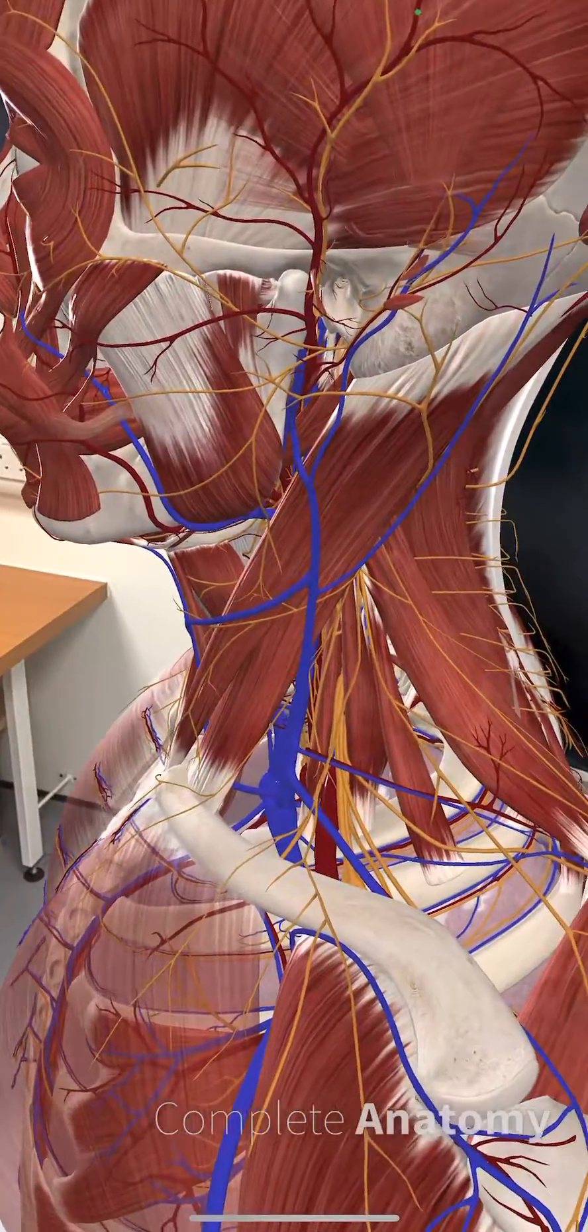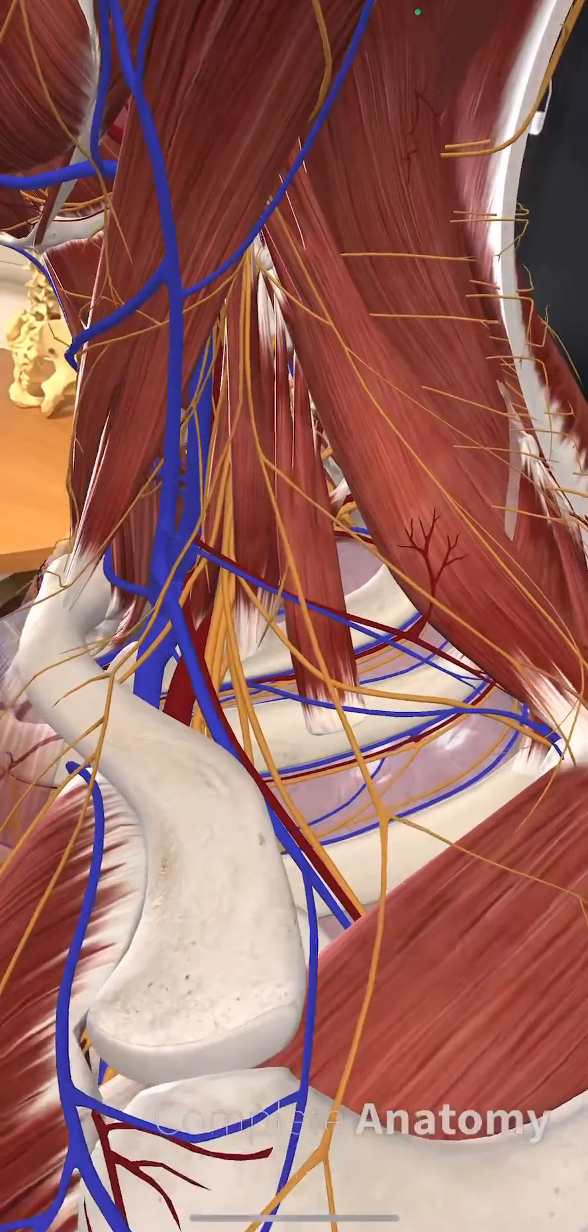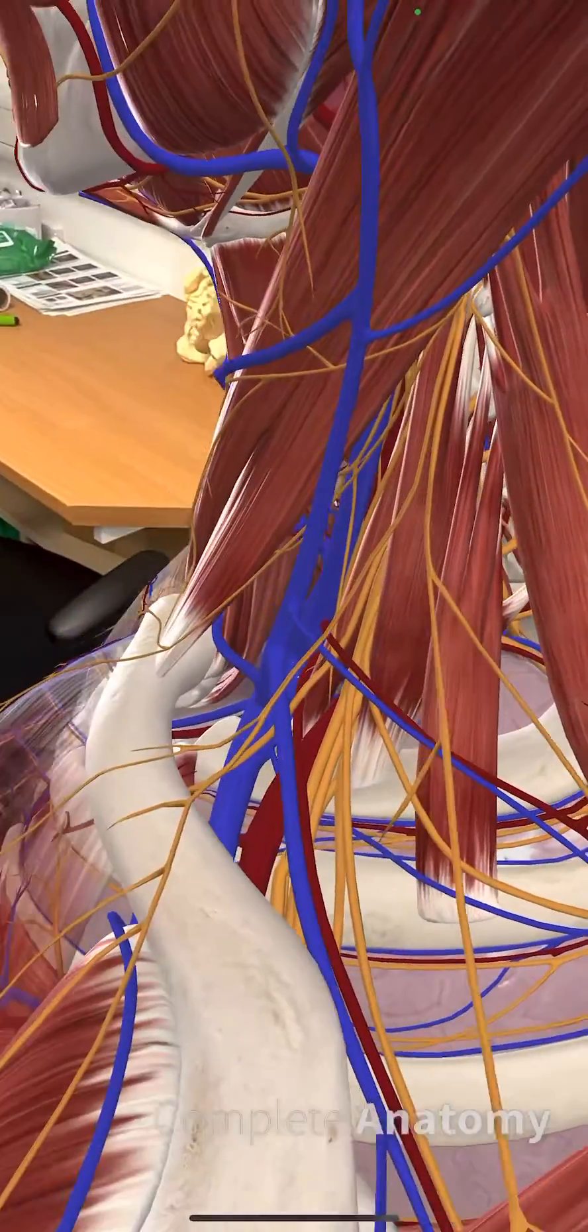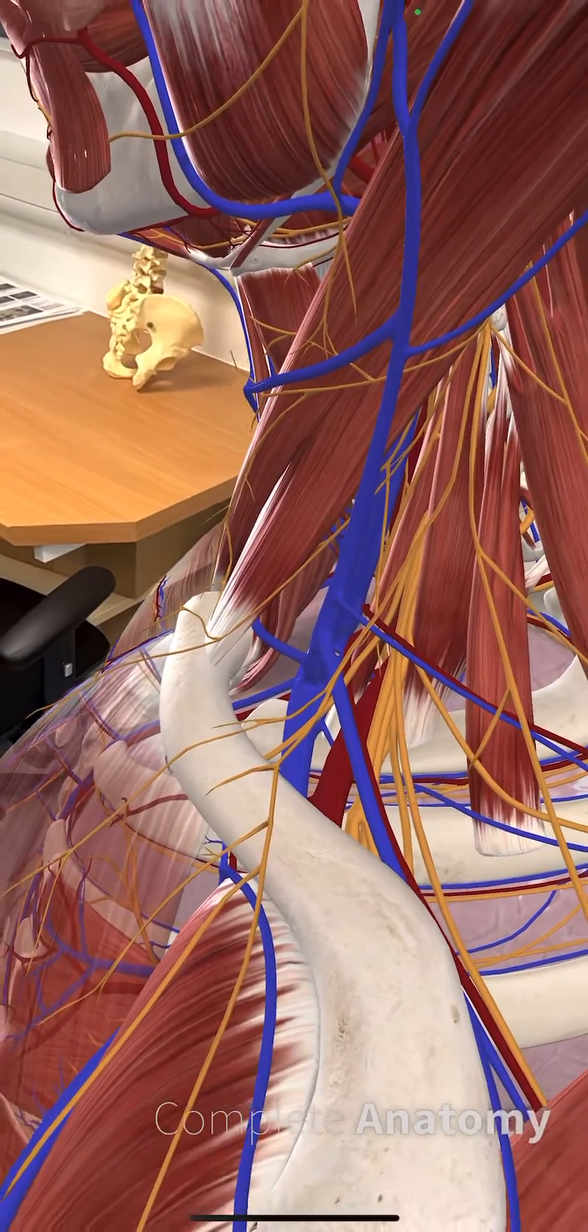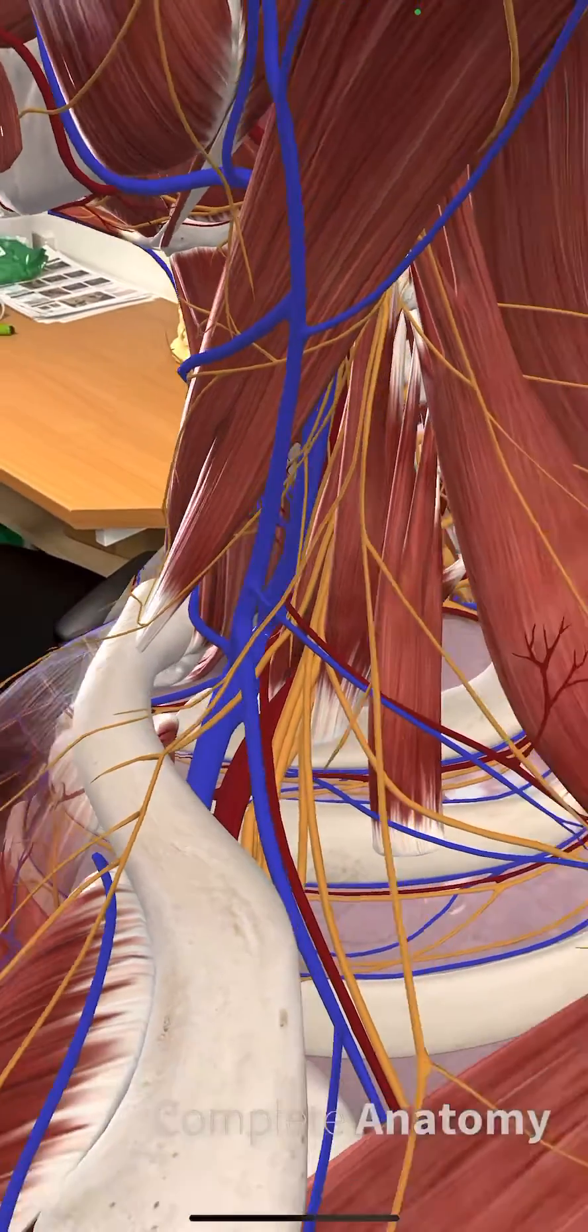So here we've got our model here. Here's our clavicle. You place your ultrasound probe immediately behind the clavicle. In fact, you can see those supraclavicular nerves running over this anterior surface of the clavicle here.